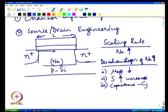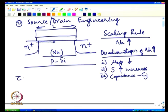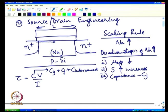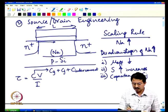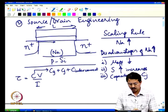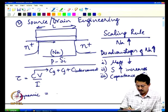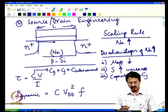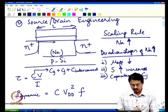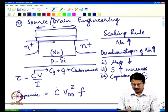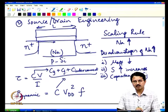Dynamic power dissipation is given by C·V_dd²·F, where F is the switching frequency and V_dd is the supply voltage. Higher junction capacitance from increased doping is therefore not good. So while we must increase doping concentration to shrink the transistor, we need to do it intelligently — this is what we call channel engineering.